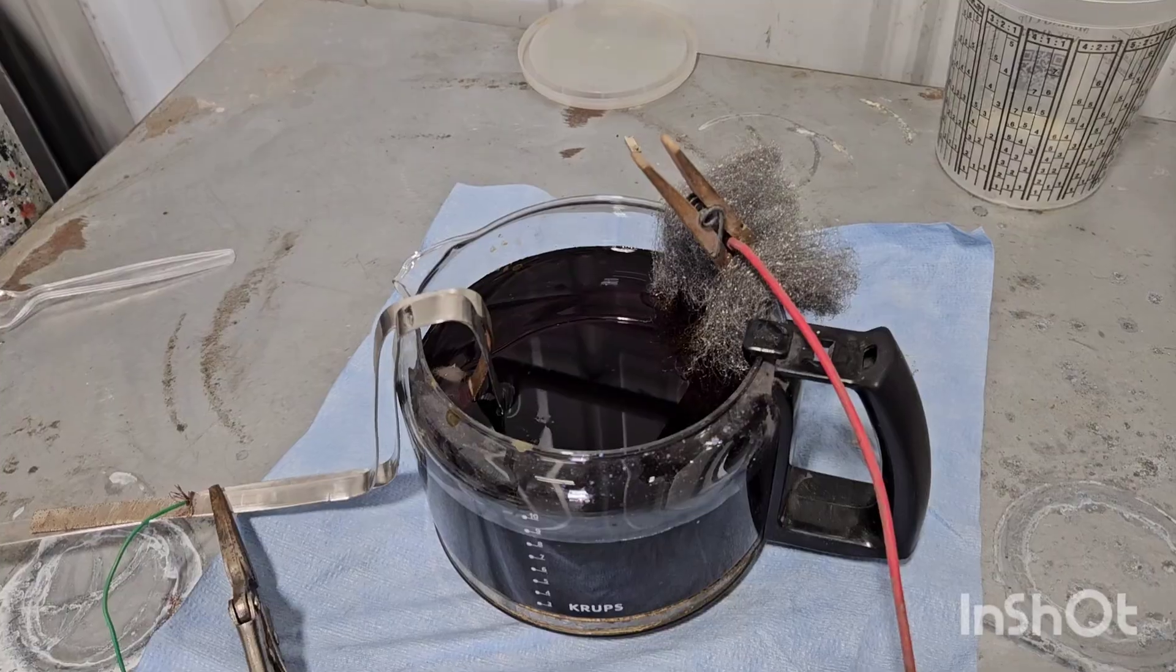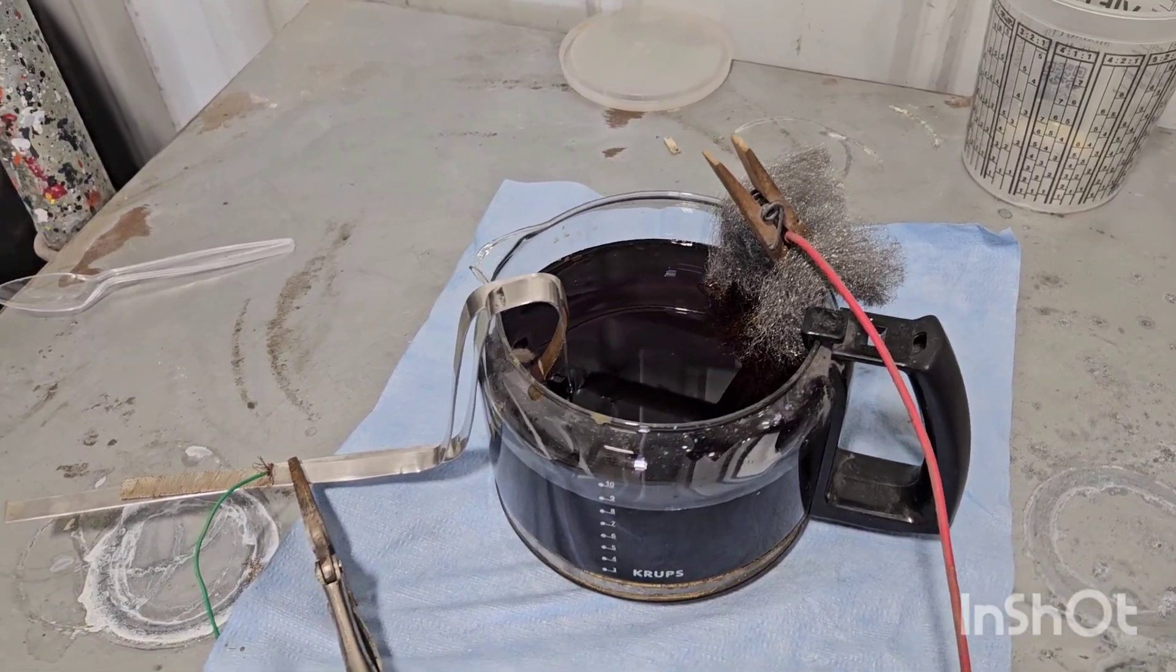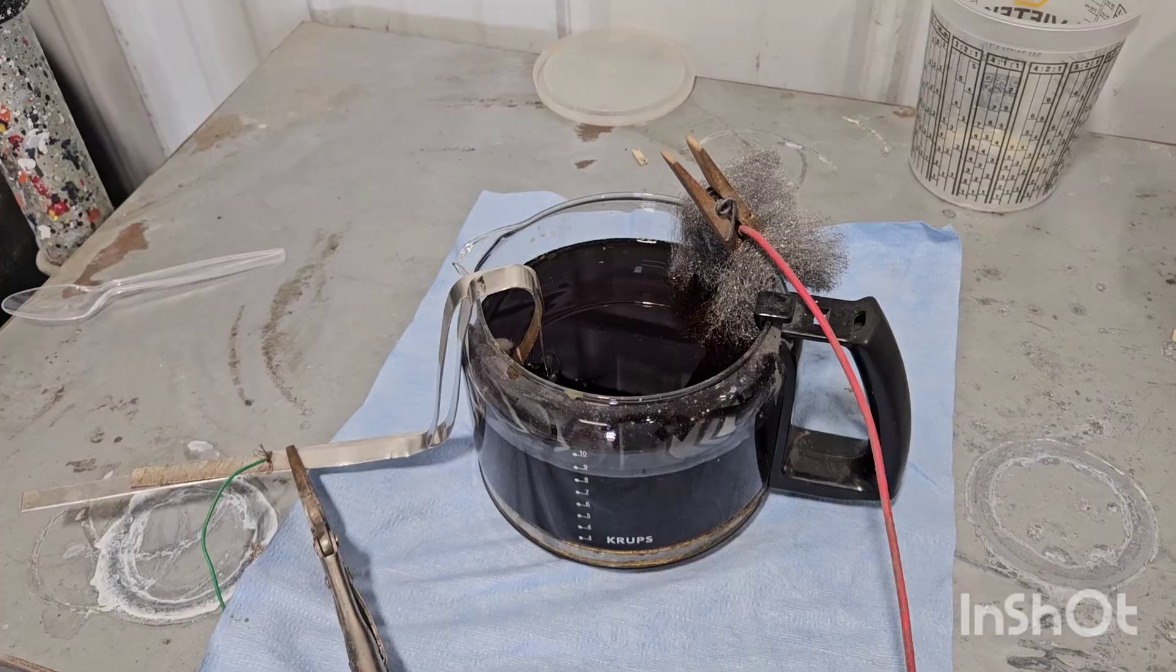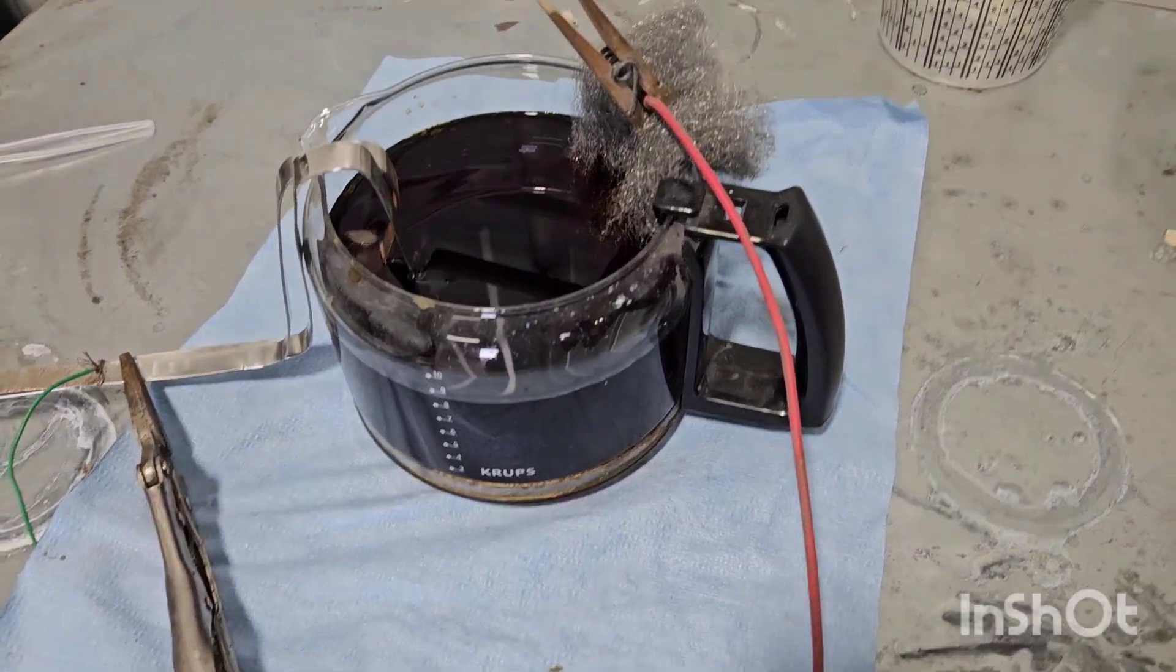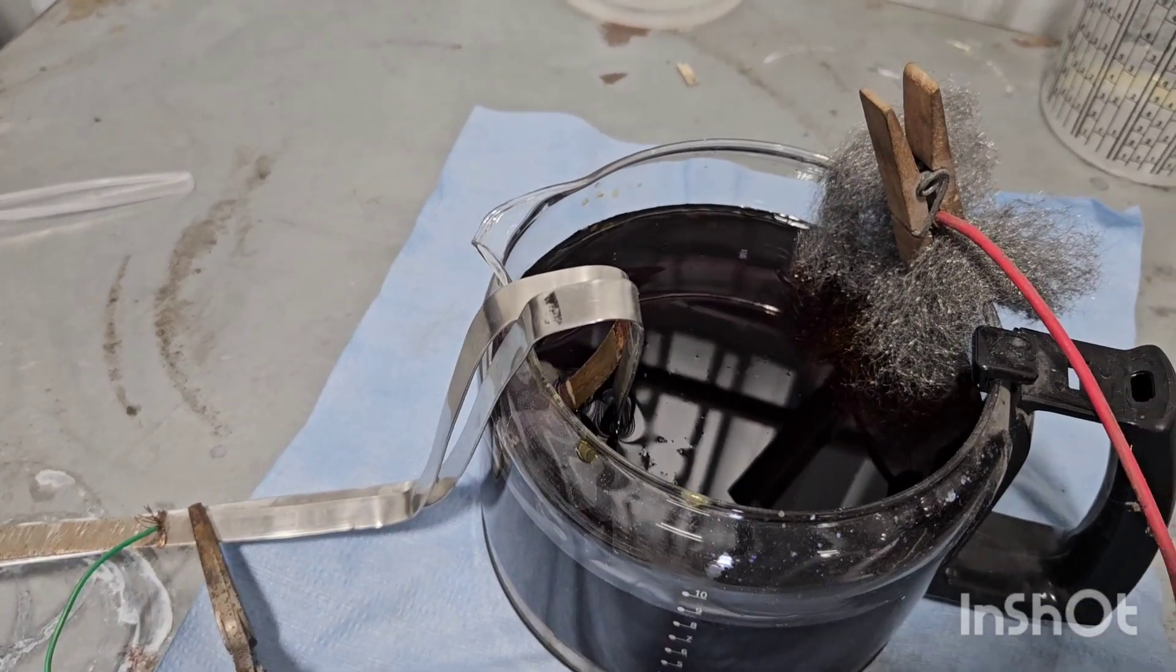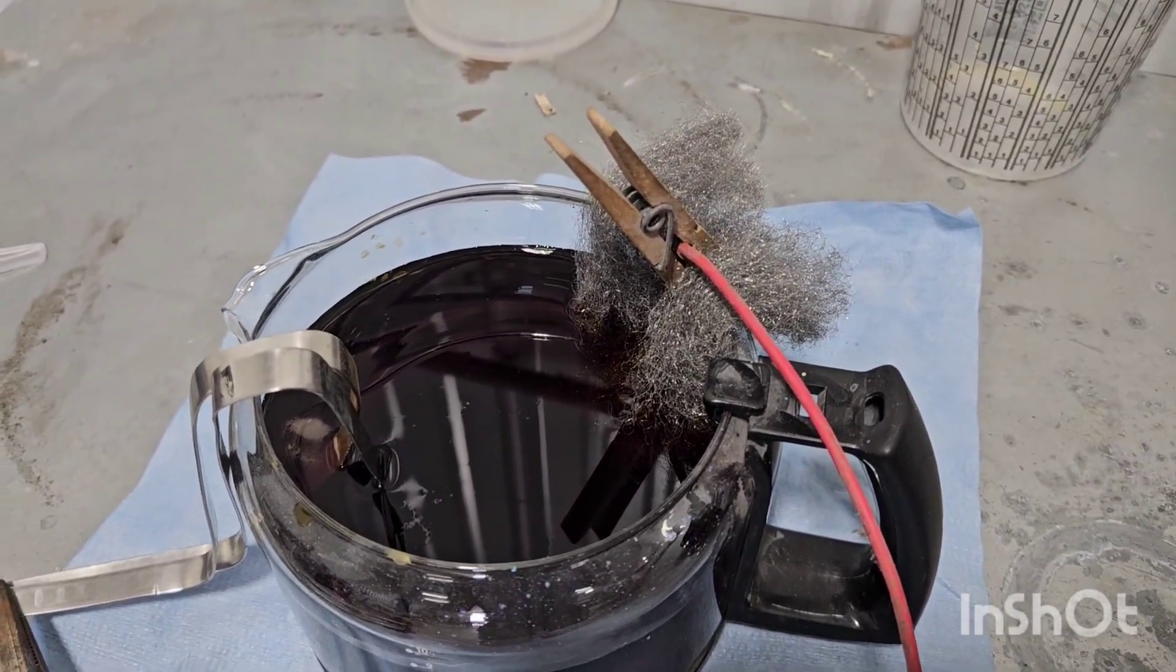So this is the Eco Gold EX solution and what I'm going to do is electro win the gold out of the solution. On the anode I have a couple pieces of stainless, on the cathode I have a piece of steel wool.